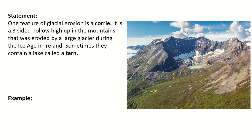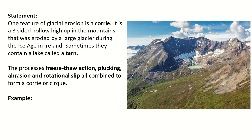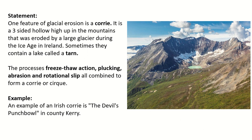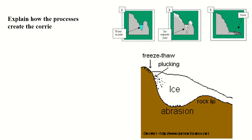You would always talk about the processes in detail. The processes are freeze-thaw action, plucking, abrasion, and rotational slip — these all combine to form a corrie or cirque. By talking about those processes in detail you'll get most of the marks for this question. You must also give an example — our example is the Devil's Punch Bowl in County Kerry. Now we must explain each of those processes.